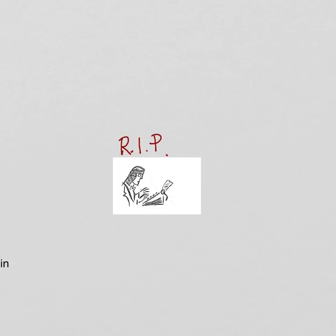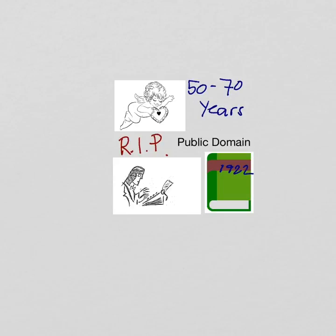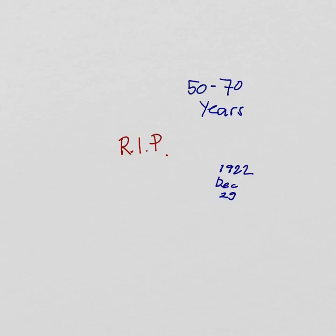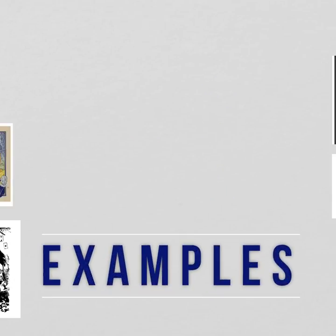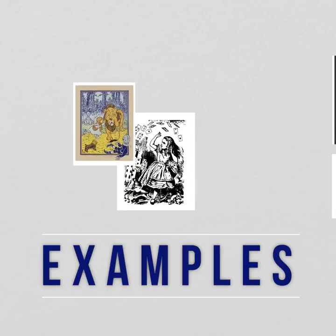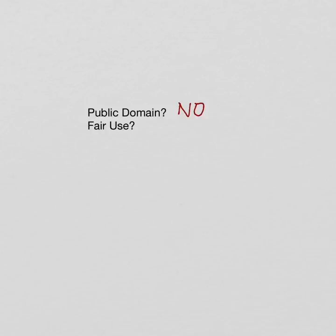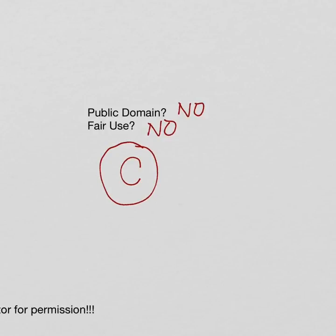Furthermore, depending on the country's law, 50 to 70 years after the creator or author dies, the creation becomes public domain. This also applies to books written before 1923. This means that anyone can use the work and even create derivatives of the work without asking for the author's permission. Examples of public domain works include Lewis Carroll's Alice's Adventures in Wonderland, L. Frank Baum's The Wonderful Wizard of Oz, and music written by Beethoven. Except for public domain works and those considered as fair use, every expression of an idea is considered as protected by copyright.